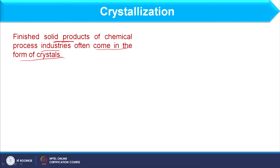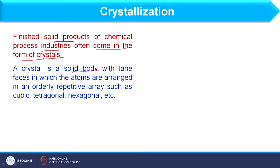A crystal is a solid body with plane faces in which the atoms are arranged in an orderly repetitive array such as cubic, tetragonal, hexagonal, etc. Whatever particles are available in the product, these particles take their positions in a definite array or format, and so we call that a crystal. That array may be a cubical shape, hexagonal, octagonal, or any other shape, but that shape is very definite.